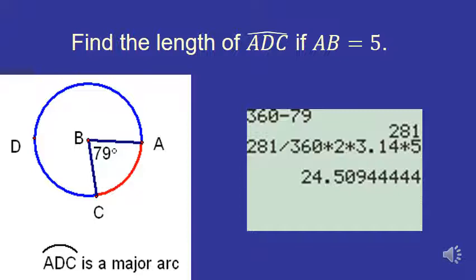So now to figure out how long it is, I've got to take 281 divided by 360, and then I take that times 2 times π times 5, the length of our radius that you're given in the problem. When I multiply that all together, I get about 24 and a half for my answer.